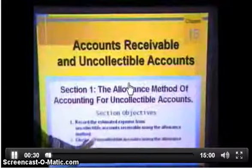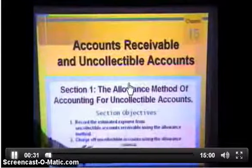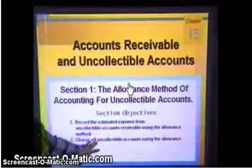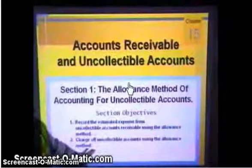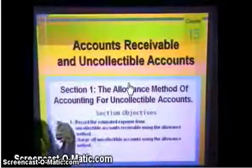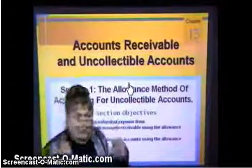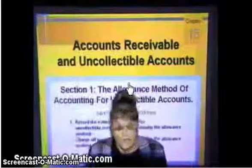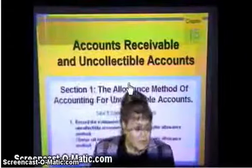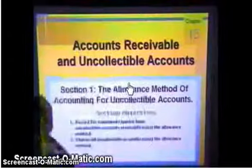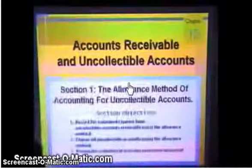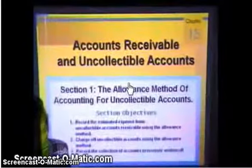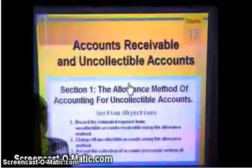We're going to look at the allowance method and how to charge off the uncollectible accounts using the allowance method. Before, all we did was put the allowance in, but we didn't go back in and charge off the account. So we're going to have to do that. And then what if we collect one that we wrote off already?